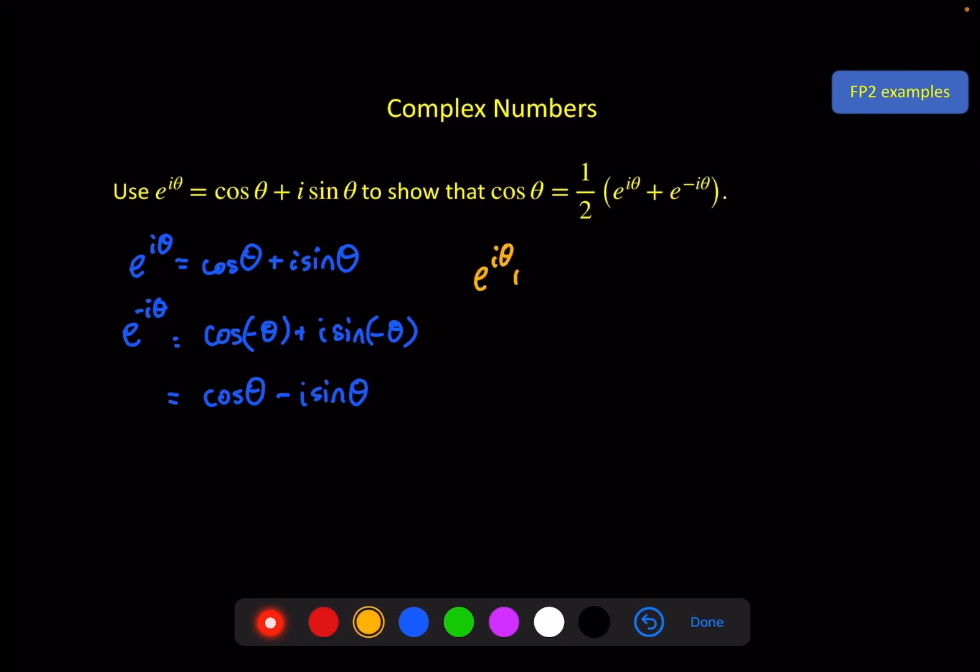e to the iθ plus e to the minus iθ is equal to cosine θ plus i sine θ plus cosine θ minus i sine θ and you can see we're just about there. These two cancel out and the other two combine to give 2 cosine θ so when we divide everything by 2 and write cosine θ on the left we have the relationship we need, like so.